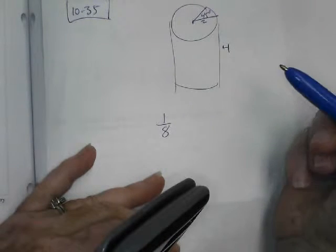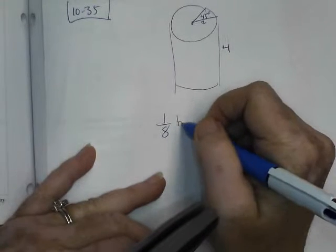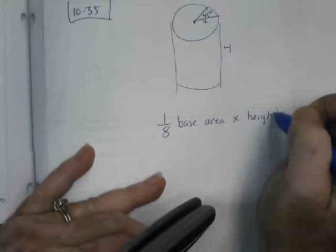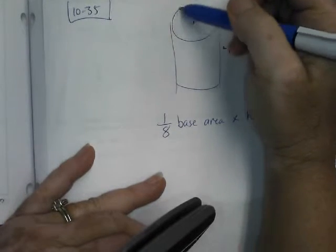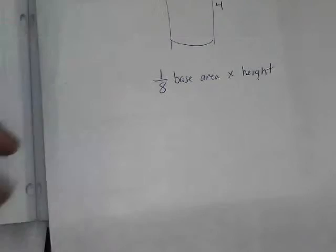Base area times height. Yep. The base area - well, you can only see the top, but the bottom would be just like it, and so it's a circle, right?